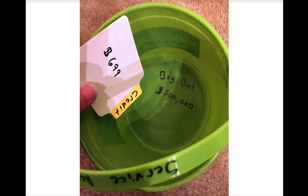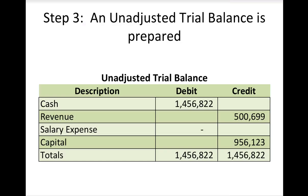I do the same thing for the credit side — I place it in the service revenue account. After I journalize and post, I always make sure I did it correctly with a trial balance. I add up all my debits and all my credits to see if I'm in balance. Since this number equals this number, my debits equal my credits — I am in balance.